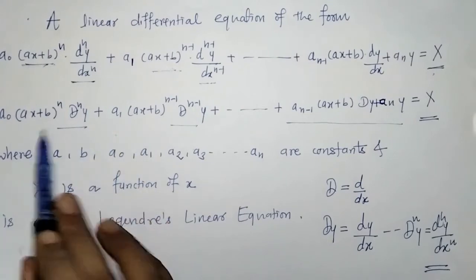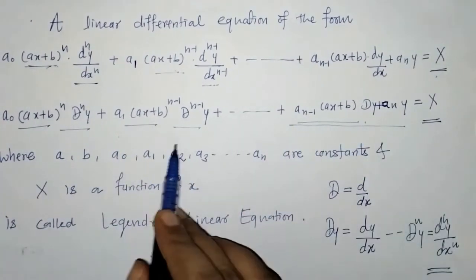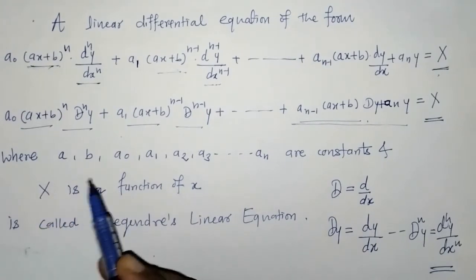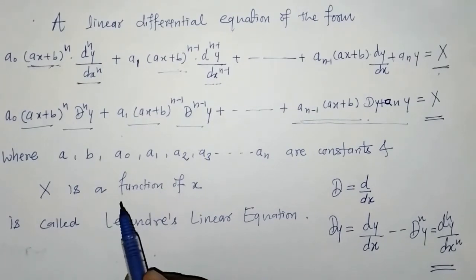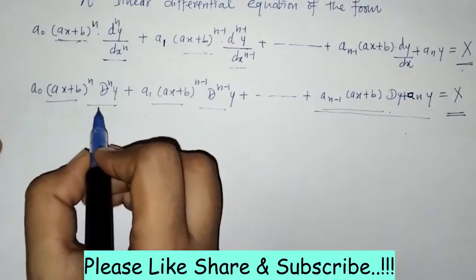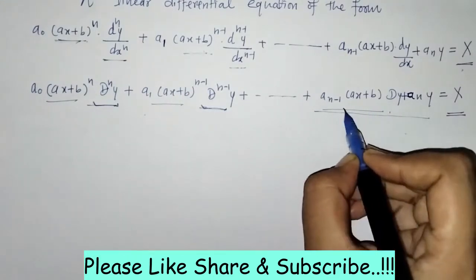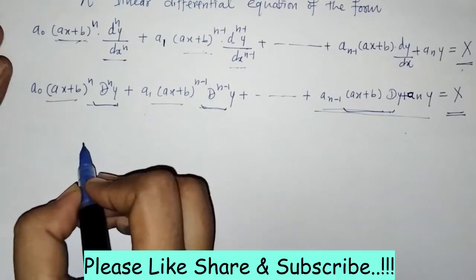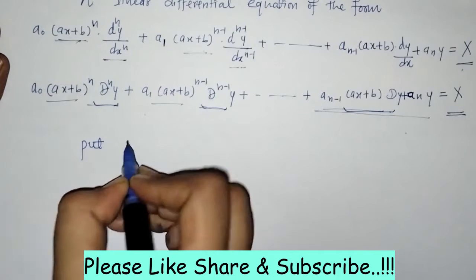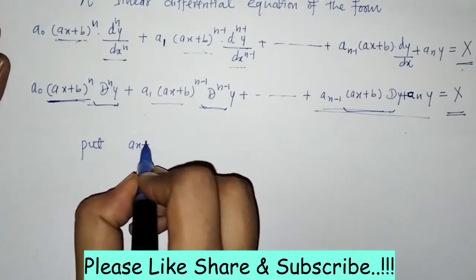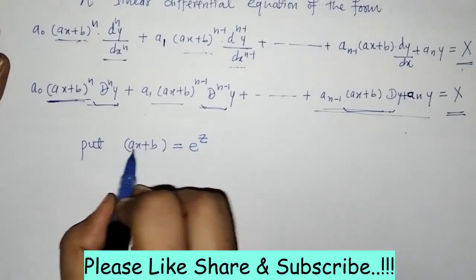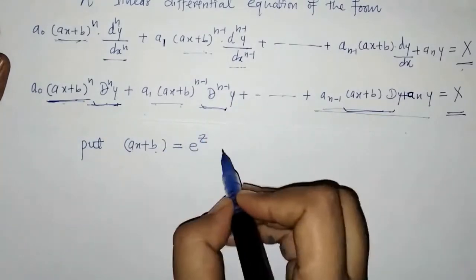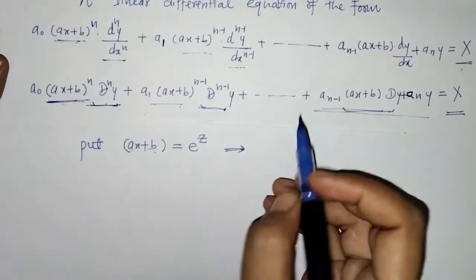This is a differential equation with variable coefficients, so we need to find its solution by converting it into a differential equation with constant coefficients, so that we can use previous methods. To do this, similar to Cauchy's linear homogeneous differential equation, we perform the substitution: put (ax + b) equals e raised to z.